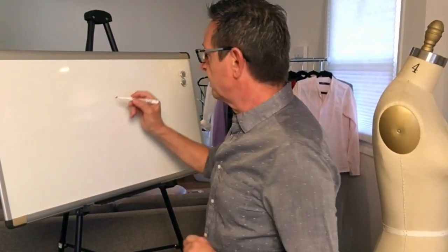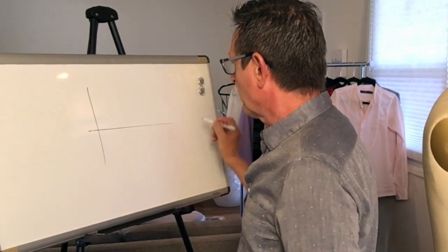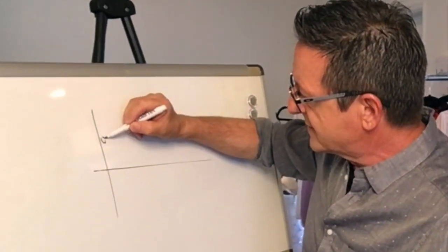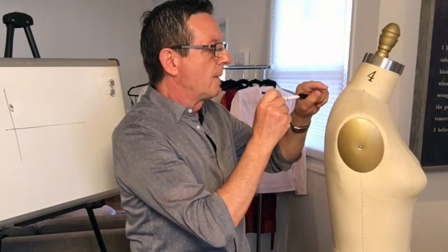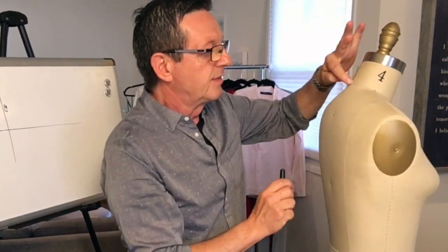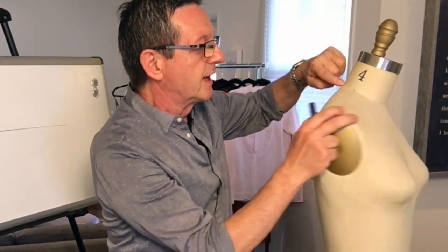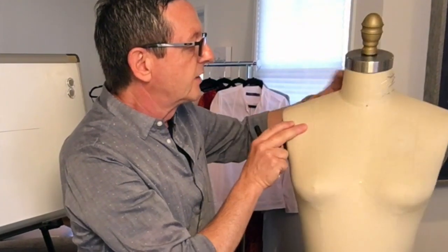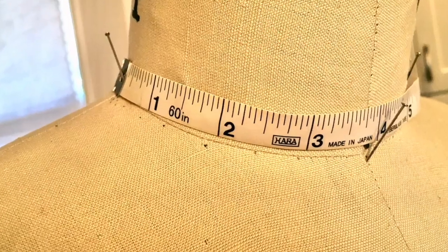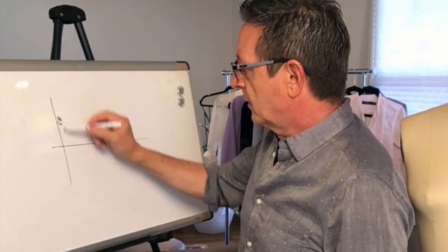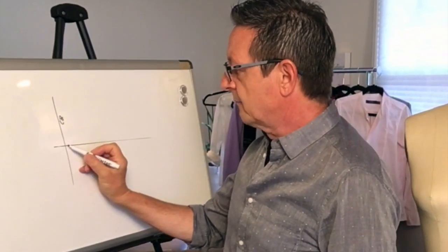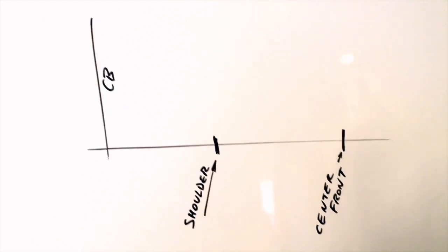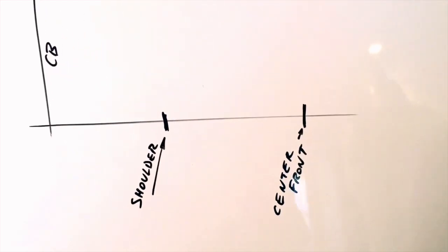We're going to start with two lines perpendicular to each other and label one CB for center back. We're going to measure from center back on the neckline to your shoulder seam, put a little notch there, then continue measuring the neckline to center front. Again, measure from center back to your shoulder, put a notch, then continue to center front and put another notch. That is the beginning of the drafting process.